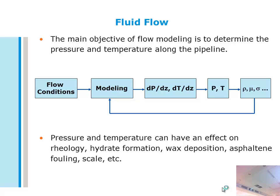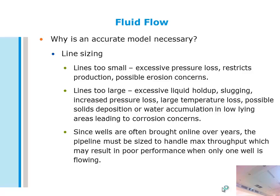From our perspective, the main objective is to determine the pressure and temperature along the pipeline. This information is important for sizing the line — a pipeline that may be tens of miles long. If it's too small, we may have excessive pressure drop. If it's too large, we may see liquid hold-up, slugging, or solids and water accumulating in low-lying areas. We also bring on wells over different years, so we have to size for maximum throughput and figure out how turndown impacts these situations.